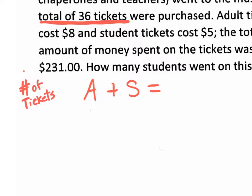If you're not able to read this word problem and write it as an equation, you're going to miss it. And if you miss two problems on the test, you can't get an A. You have to be able to get these two right to get an A.